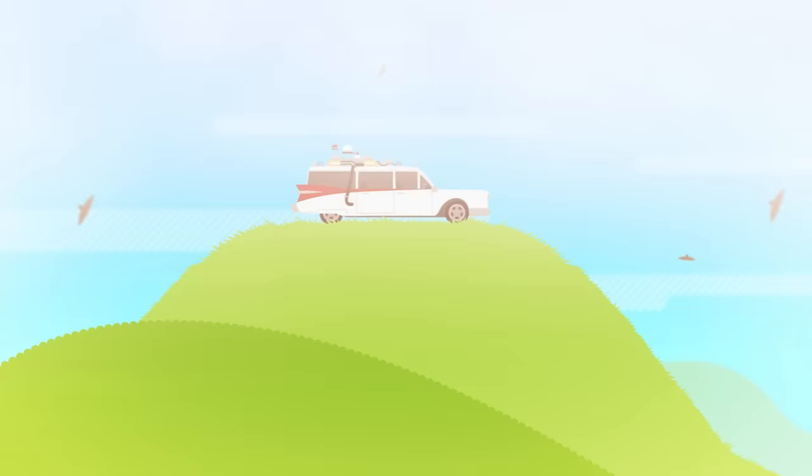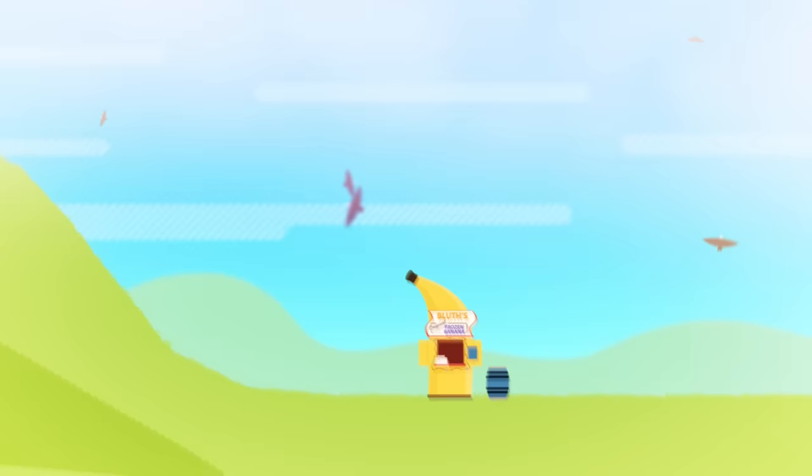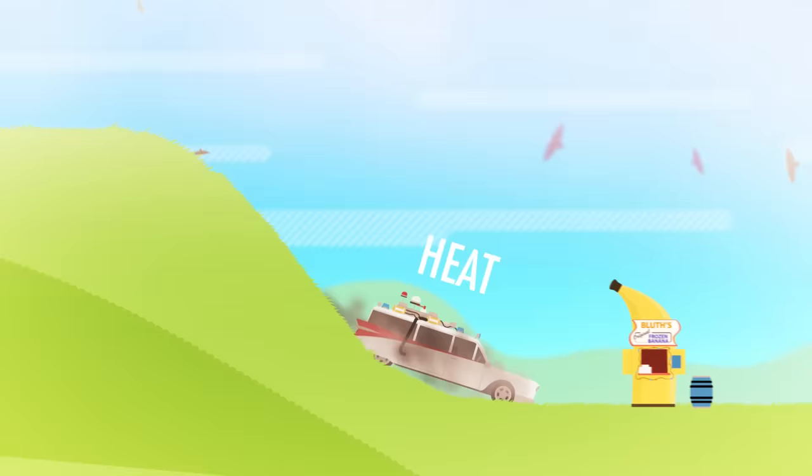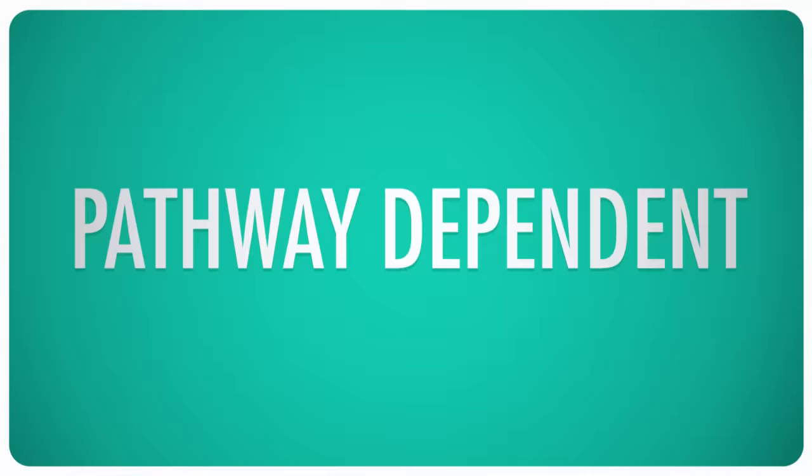Say my car is at the top of a hill and there's a frozen banana stand at the bottom. If I roll down with my brakes on, lots of heat will be transferred into my brake pads and brake discs, and I will kinda like very slightly knock into the frozen banana stand, doing a tiny amount of work on it. But if I am reckless and insane, very little heat will be generated, and my car will do a huge amount of work on the frozen banana stand. Both paths transfer the same amount of energy, but one produces very little heat, and the other produces a ton. And so, we say that heat and work are pathway dependent.